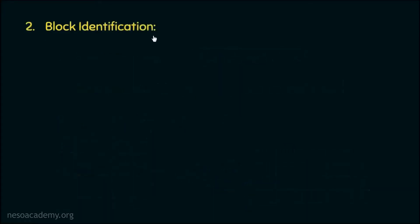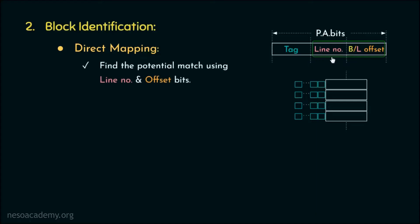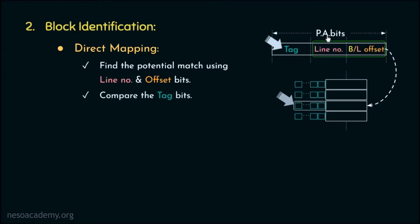For block identification, we try to identify whether a main memory block is present in the cache. In direct mapping, the physical address is divided into tag bits, line index, and block offset. We use the line index and offset to find the potential match in the cache, then compare the associated tag with the tag in the physical address.